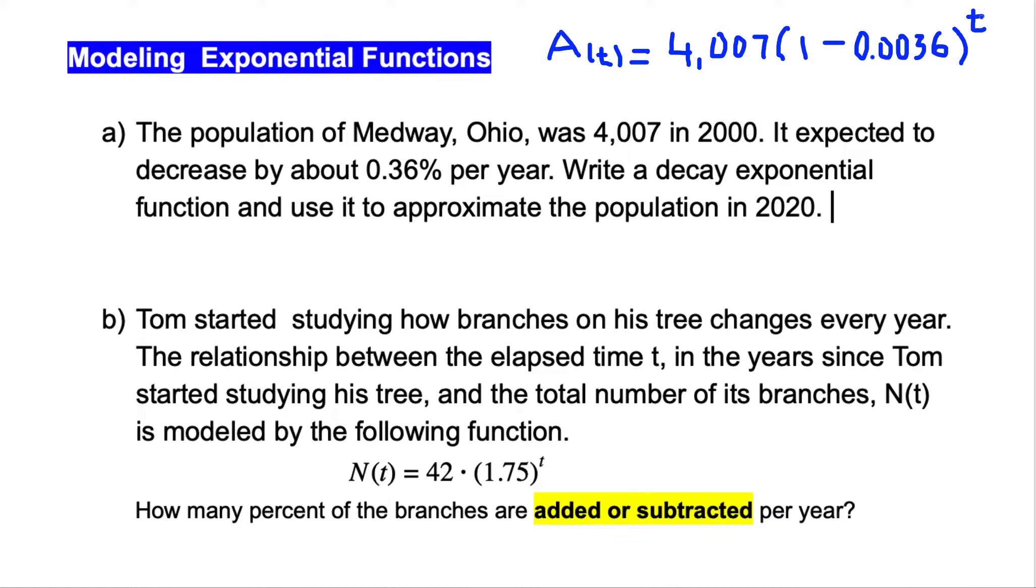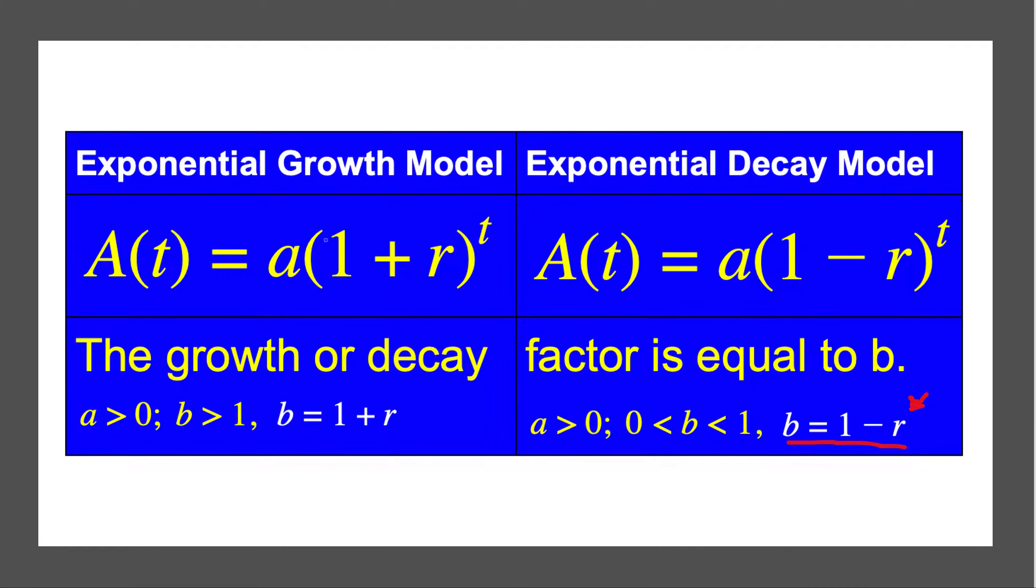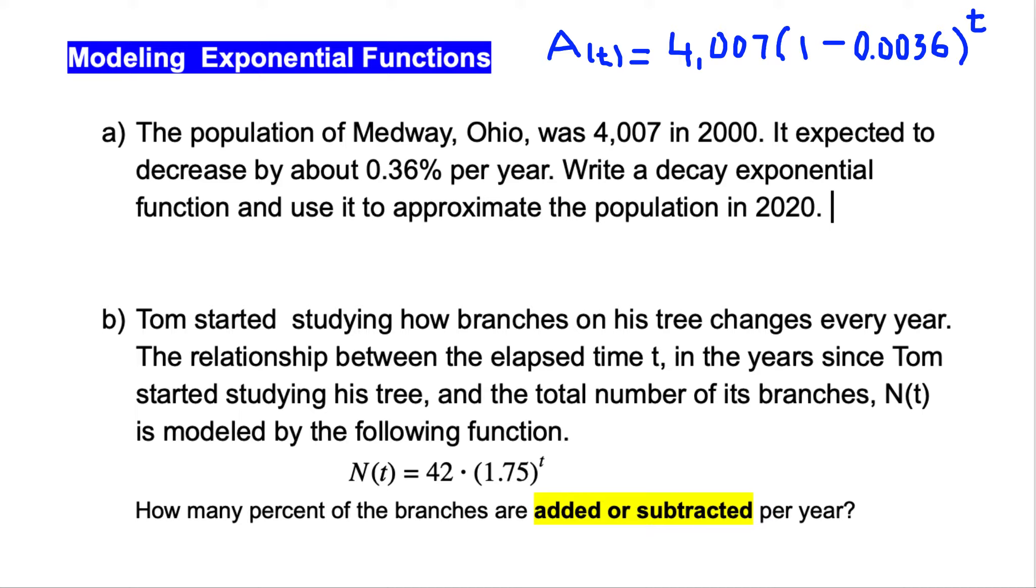In exponent t. This is the exponential decay model formula. We just plug in the numerical values in the formula. Instead of a, the initial value is 4,007 population. It is 1 minus r, and in exponent t. We have everything there.